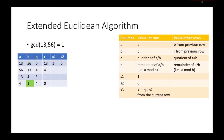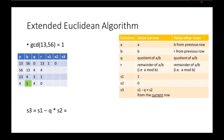Now let's add the column S3 to the table. We have to calculate the value of S3 using S1 minus Q times S2. That equals 1 minus 0 times 0, which equals 1. So the value of S3 on the first row of the table equals 1.